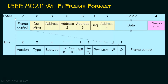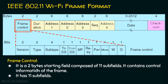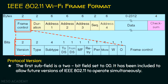The fields in the Wi-Fi frame format are represented in bytes, while all the subfields are in bits. The frame control is a two-byte starting field composed of 11 subfields, and it contains the control information of the frame. The first subfield is the version — a two-bit field set to 00. It has been included to allow future versions of IEEE 802.11 to operate simultaneously, just for compatibility.